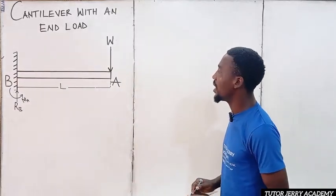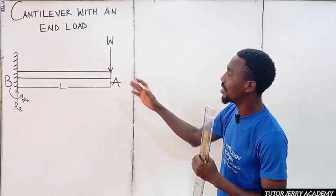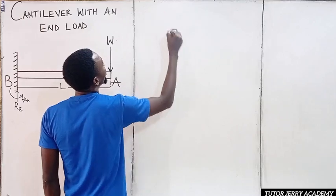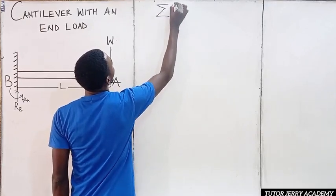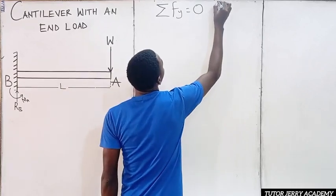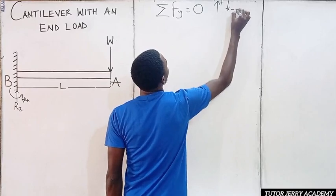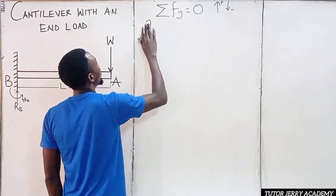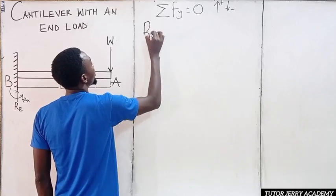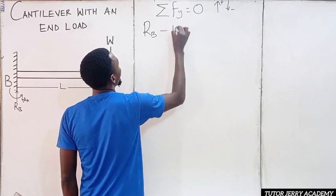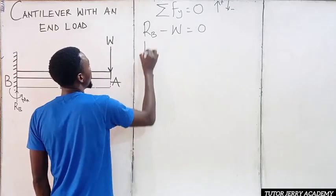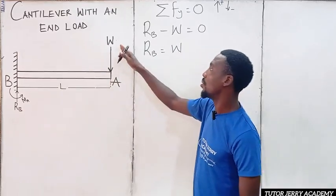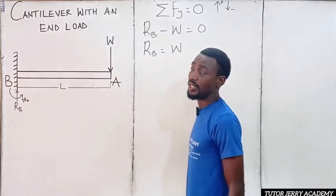The first thing we are going to do is calculate the reactions. The sum of forces in the Y direction should be equal to zero. Taking upward forces as positive and downward forces as negative, we have R_B minus W equals zero. Therefore R_B equals W. This shows that the reaction at B will balance the applied load W.